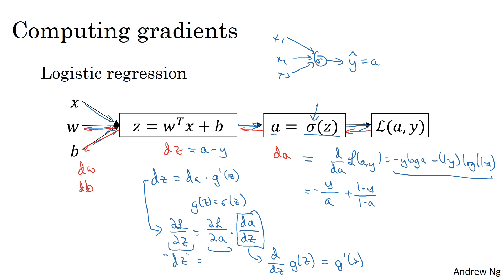So that's why this expression, which is dz in our code, is equal to this expression, which is da in our code, times g prime of z. That last derivation would make sense only if you're familiar with calculus, and specifically the chain rule from calculus. But if not, don't worry about it. I'll try to explain the intuition wherever is needed.